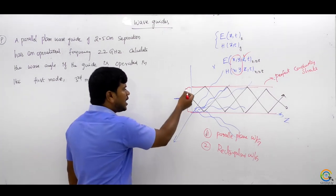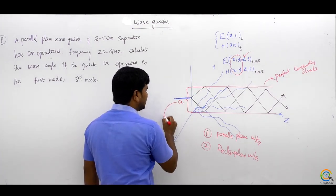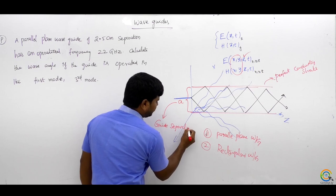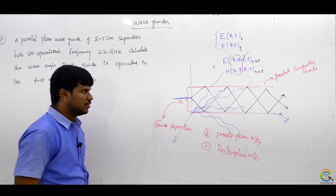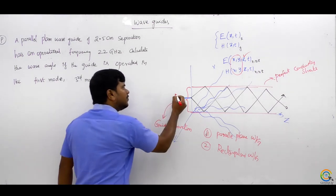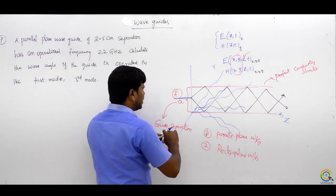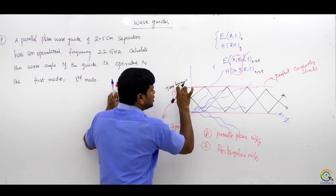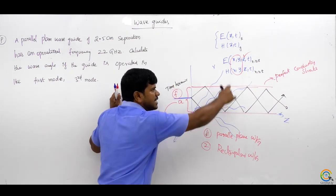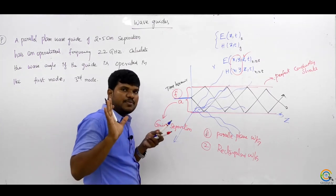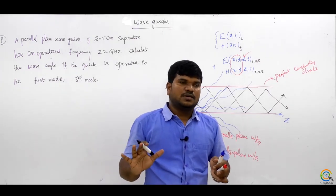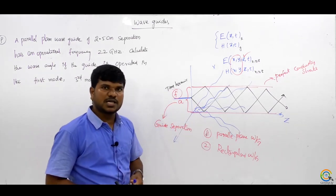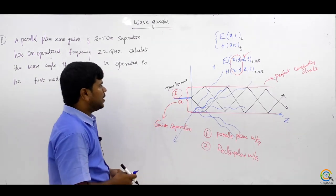The separation between these two plates is called the guide separation. A time harmonic source is fed to this waveguide; only then will it generate an EM wave. We know the time harmonic source is a must for generating EM waves everywhere — whether in a transmission line, free space, or waveguide.